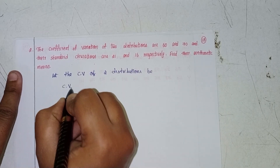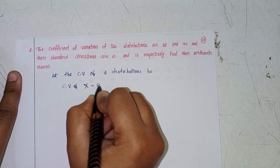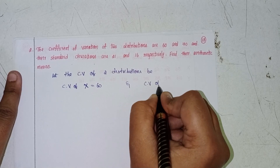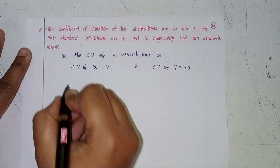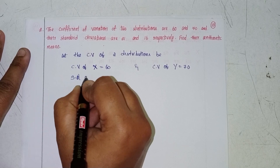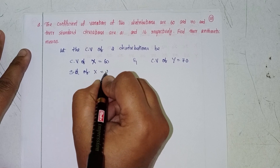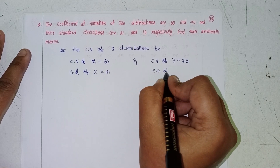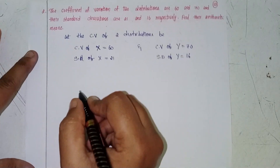CV of x equals 60, and CV of y equals 70. Standard deviation of x equals 21, and standard deviation of y equals 16.